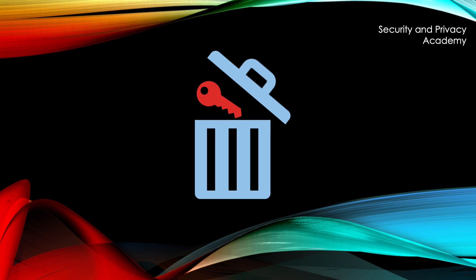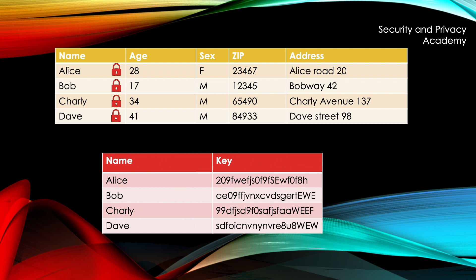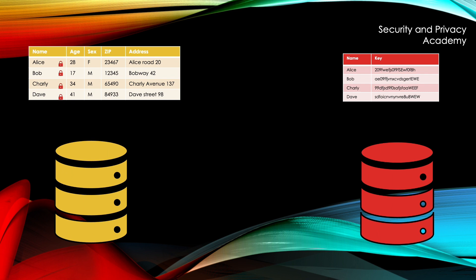That's why the idea of crypto shredding has been introduced. We have our database of four customers. What we do is encrypt each of the entries individually, so each record has an individual key — one key for Alice, a key for Bob, a key for Charlie, a key for Dave. There is no universal key; each is a user-specific key. These keys are stored in another database — the key database — which is stored at a different location than the main database, as illustrated here.